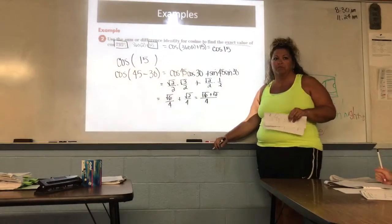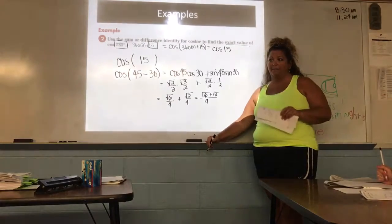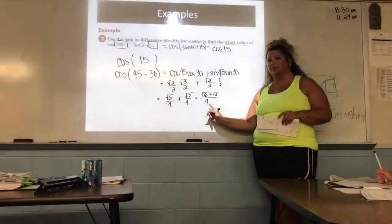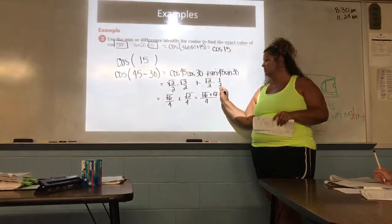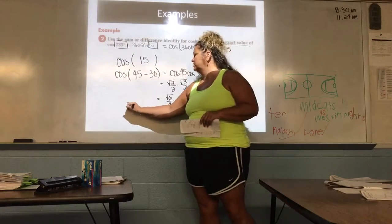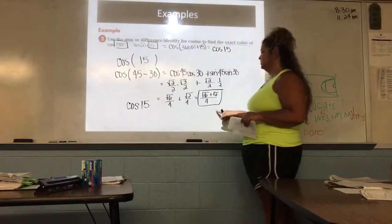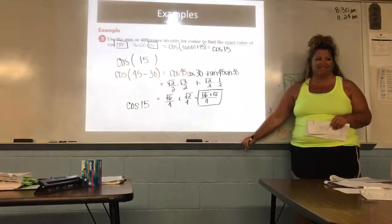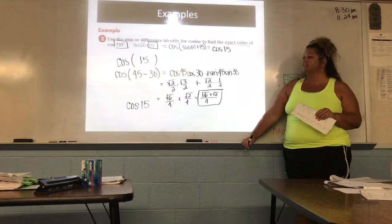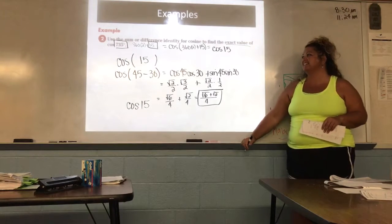So I would have root 6 plus root 2 all over 4. Now, all of those are even numbers. So can I just reduce everything? No. Why not? Because they are under radicals. Yeah. I can reduce radicals with radicals and numbers with numbers. This is exact. That is what cosine of 15 is equivalent to. Fun times. I like this. Go ahead and hit enter. Let's look at another one.